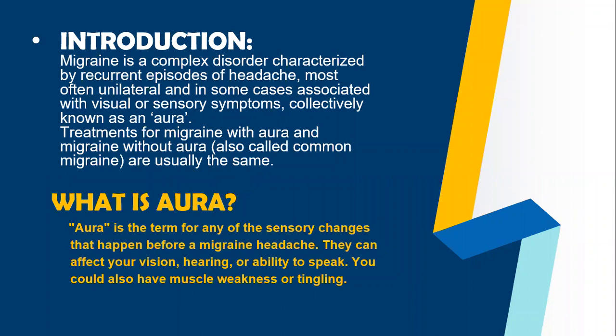Migraine is a medical condition that involves severe recurring headaches and other symptoms. These recurrent episodes of headaches are most often unilateral and in some cases associated with visual or sensory symptoms. These visual or sensory symptoms are collectively called aura. Aura is the term for any of the sensory changes that happen before a migraine headache. Aura is the warning sign of migraine.